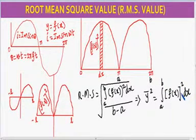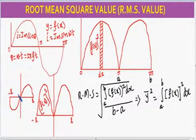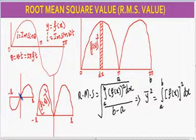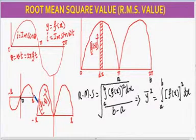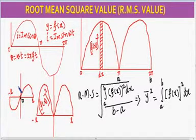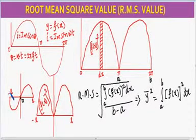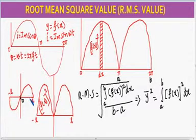Now let us take another example: the spread of heat from the origin. At the origin, a heat source is there. Heat is generated and will spread in both the negative x direction and the positive x direction. So the variation of heat from −l to l is represented by f(x). If you want to find out the average heat from −l to l, the average value is the area under the curve divided by the base.